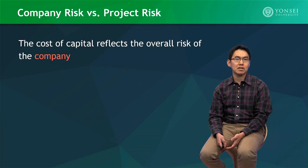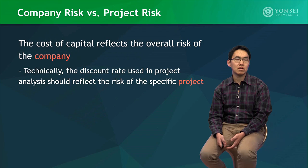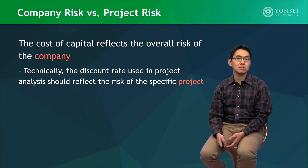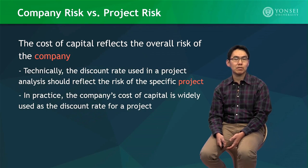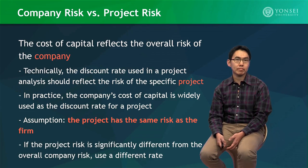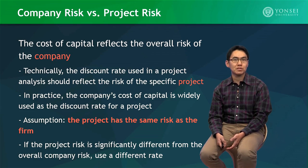According to what we learned so far, it seems that the cost of capital reflects the overall risk of the whole company. Technically, however, the discount rate used in a project analysis should reflect the risk of the specific project being analyzed, not the risk of the company. Nevertheless, in practice, the company's cost of capital is widely used in project analysis. The assumption practitioners make is that the project has the same risk as the firm. This is true in most cases. However, if you believe that the new project's risk is significantly different from the overall company risk, you should apply a new rate that is different from the company's cost of capital.